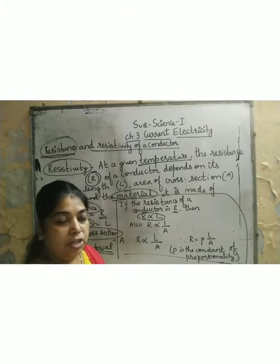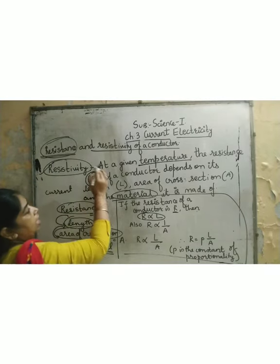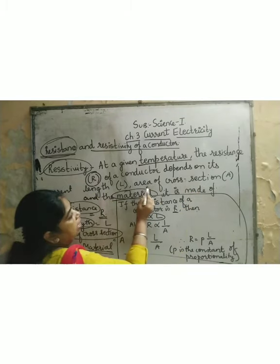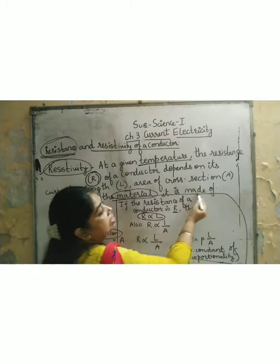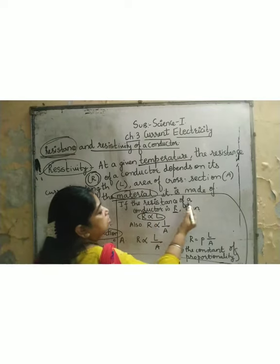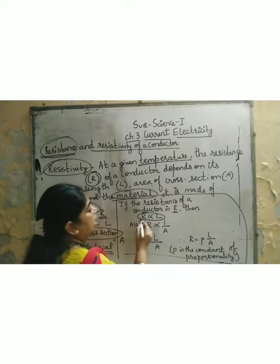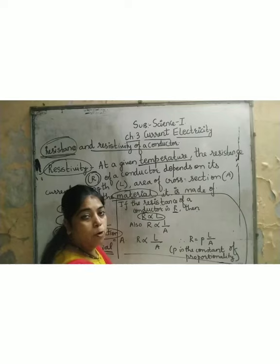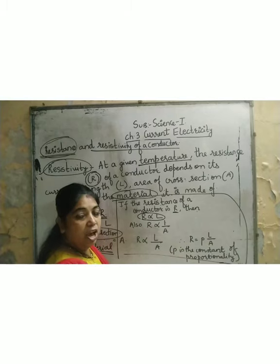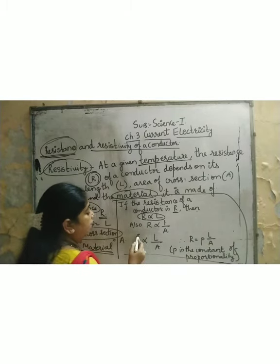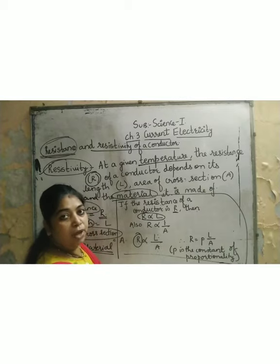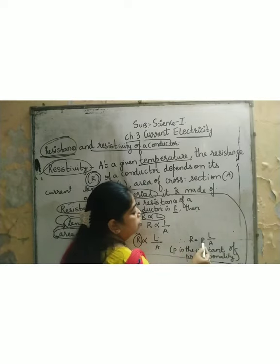Pay attention. At a given temperature, the resistance R of a conductor depends on its length, area of cross-section, and the material it is made up of. So if resistance of a conductor is R, resistance is directly proportional to L, and inversely proportional to 1 upon A — the area of cross-section. Therefore, R equals P times L upon A, where P is the constant of proportionality.